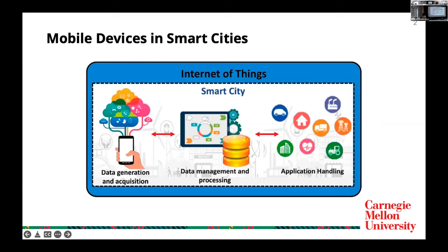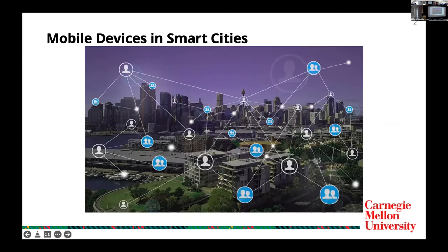The recent proliferation of devices in the Internet of Things provides essential building components for smart cities, including data generation, data management, and application handling. Data generation, for example, requires a large-scale deployment of sensors and actuators across urban areas, which can monitor and respond to the environment. These services rely on the ability of multiple things to collect data, which is usually accomplished through mobile crowdsourcing.